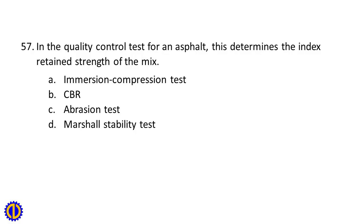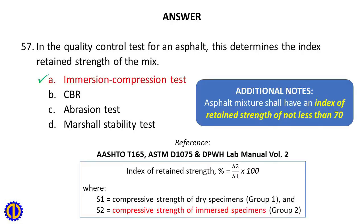Question 57: This determines the index of retained strength of the mix. A. Immersion compression test, B. CBR, C. Abrasion test, D. Marshall stability test. Answer: A. Immersion compression test. Reference: AASHTO T165, ASTM D1075, DPWH Lab Manual Volume 2. Index of retained strength = (compressive strength of immersed specimens ÷ compressive strength of dry specimens) × 100. Additional note: Asphalt mixture shall have an index of retained strength of not less than 70.